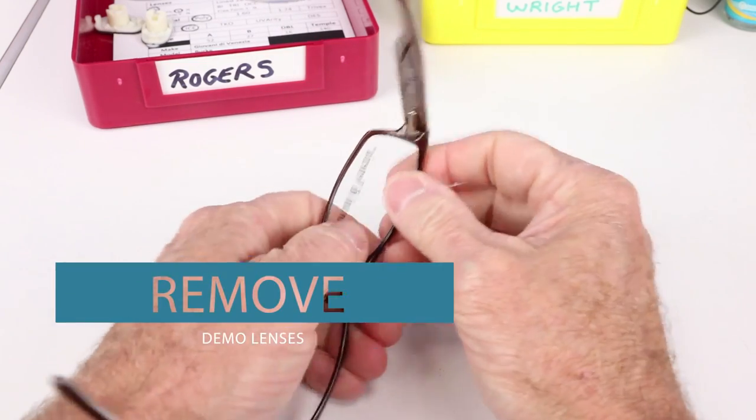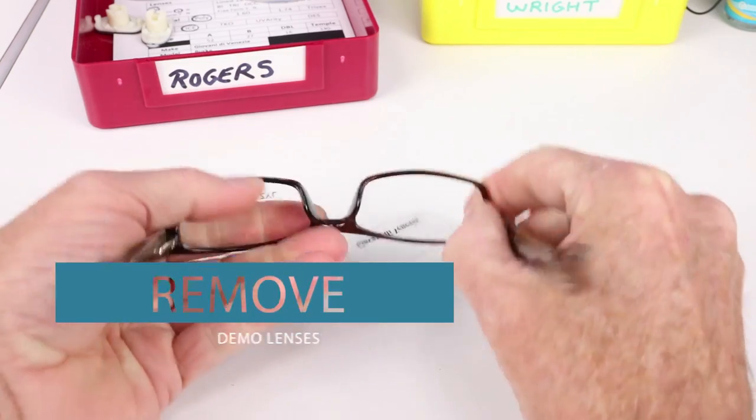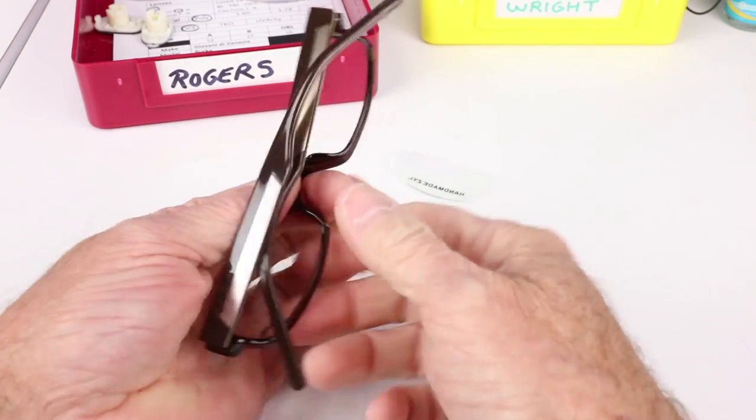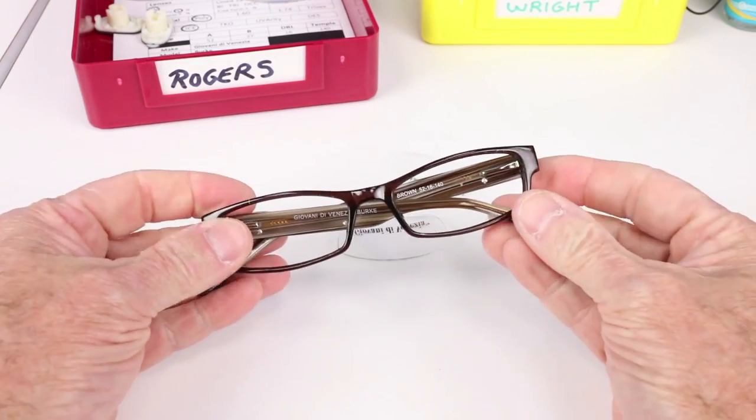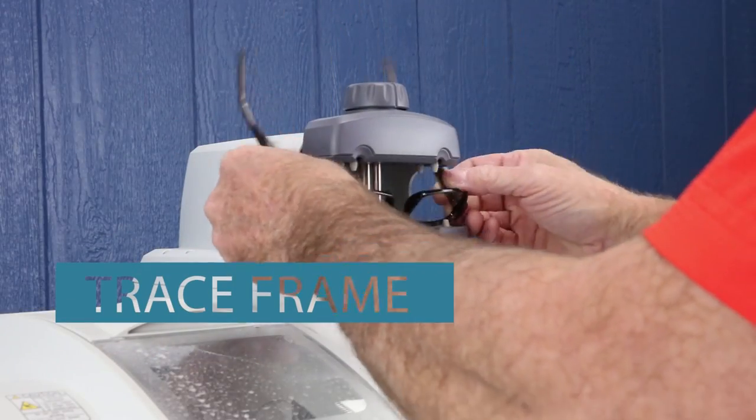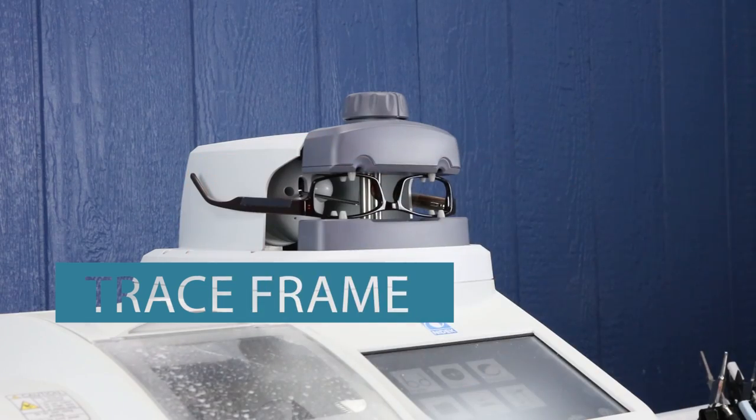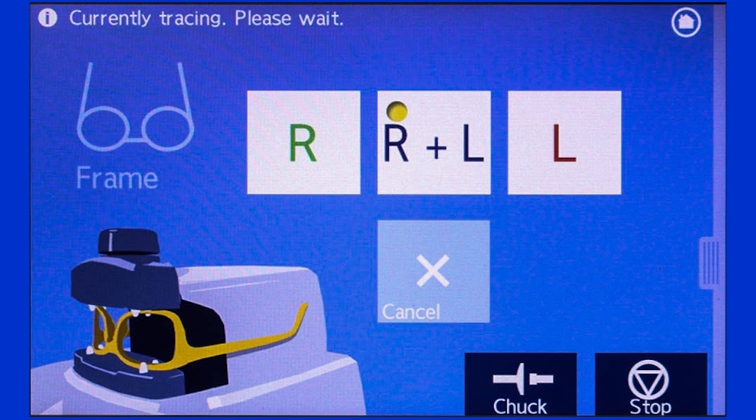Now's a good time to pop out the demo lenses. Just get your thumb back there. Pop and pop. Because now that those are out, it is time to do some tracing. Put the frame into the tracer, and choose any data information that you need depending on your frame type, lens type, and how you're obtaining the pattern information.